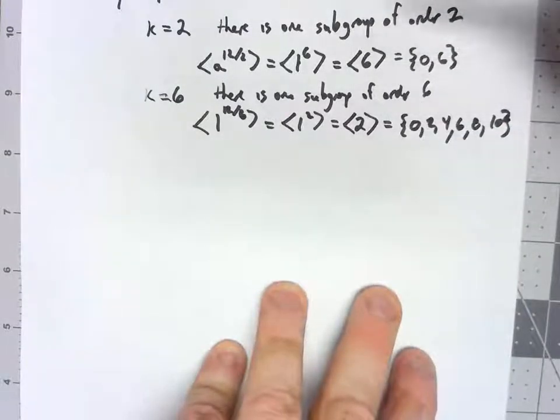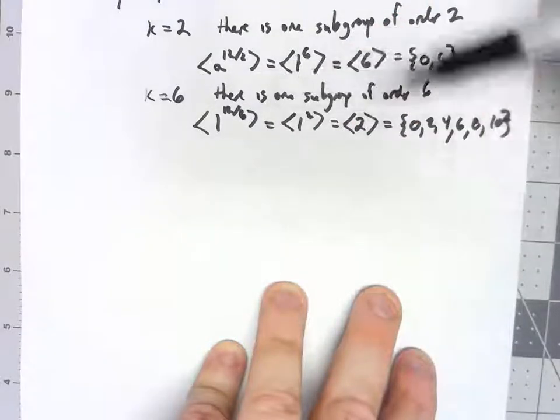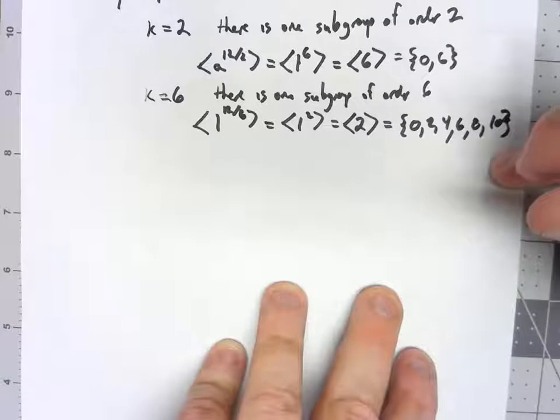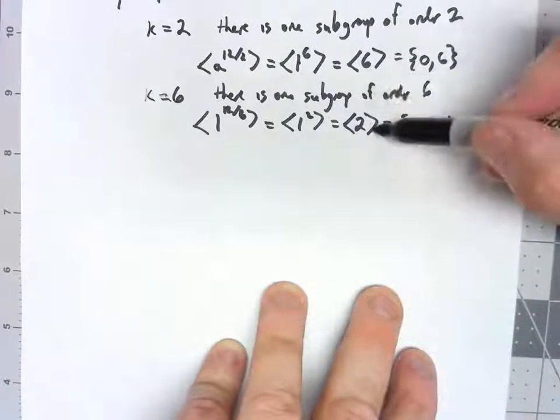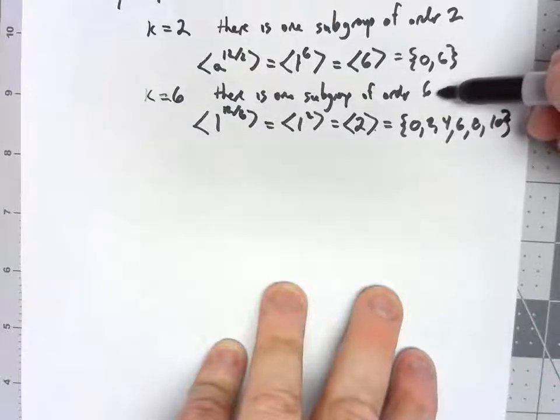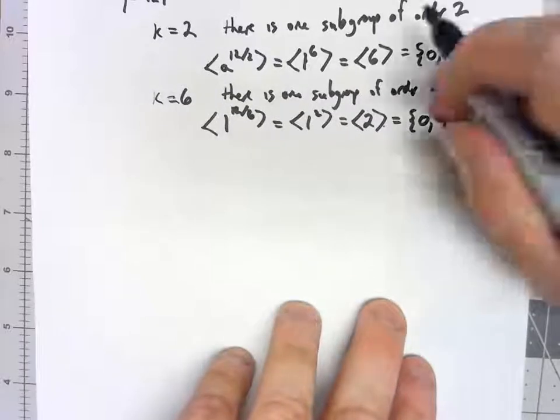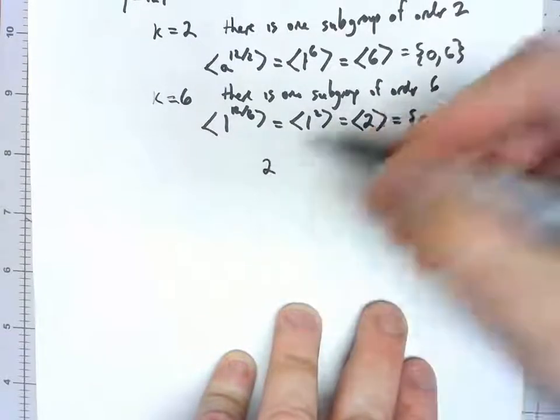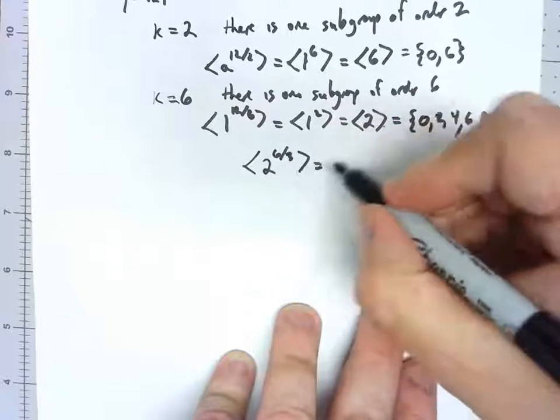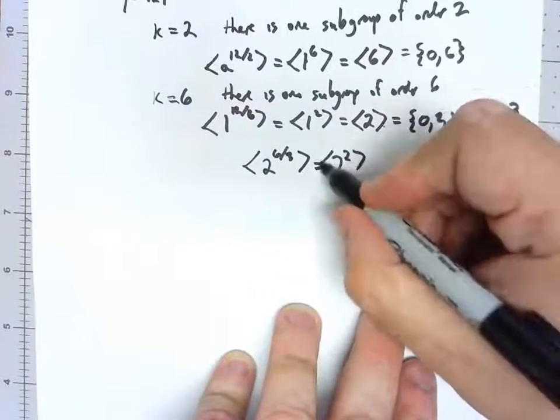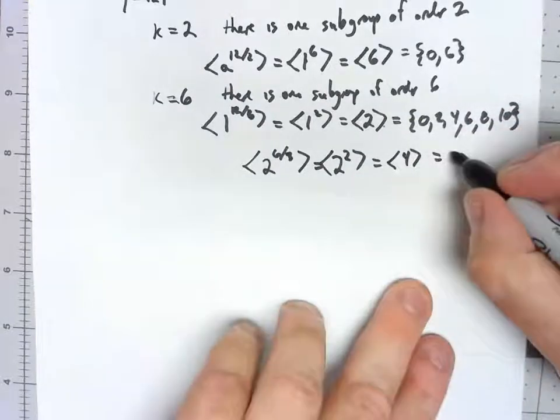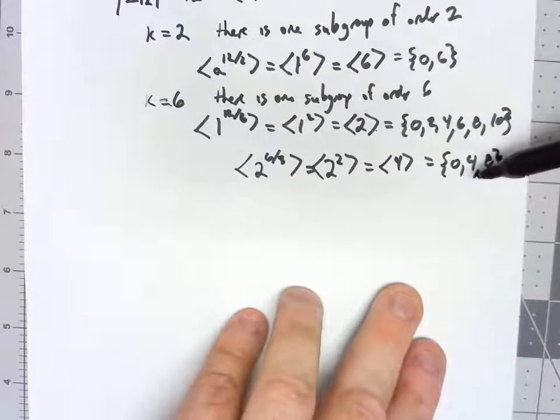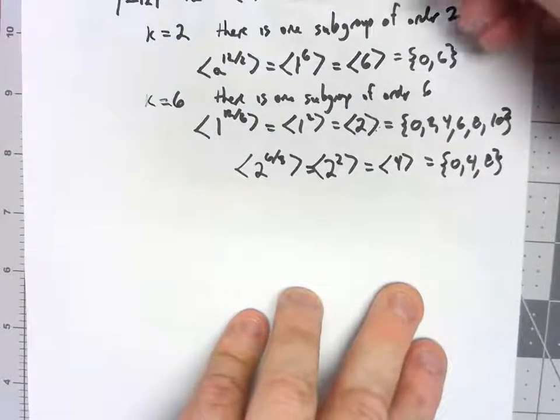But now this thing works kind of recursively. Now that I've got this and I've got the subgroup generated by 2, which has order 6, I could apply it to that. There's one subgroup of this set right here, which is of order 3, because 3 divides into there. The subgroup of that which would be of order 3 would be 2 to the 6 over 3 would be 2 to the 2nd. 2 plus 2 is 4. So we have 0, 4, 8. That's both a subgroup of this and a subgroup of the original group.